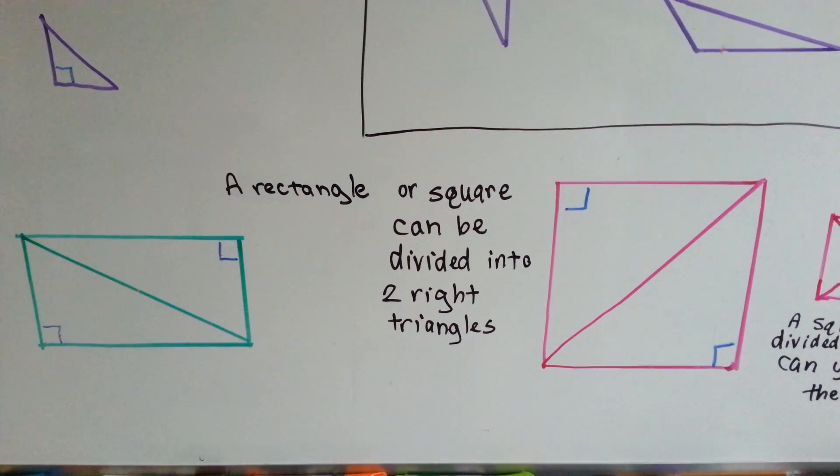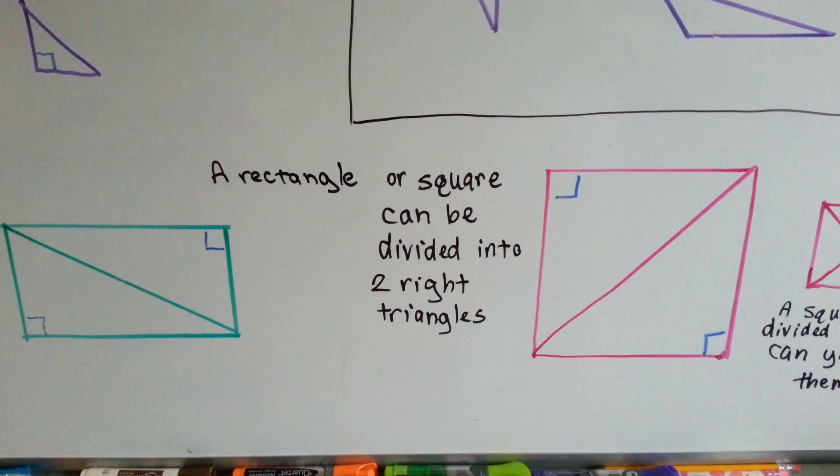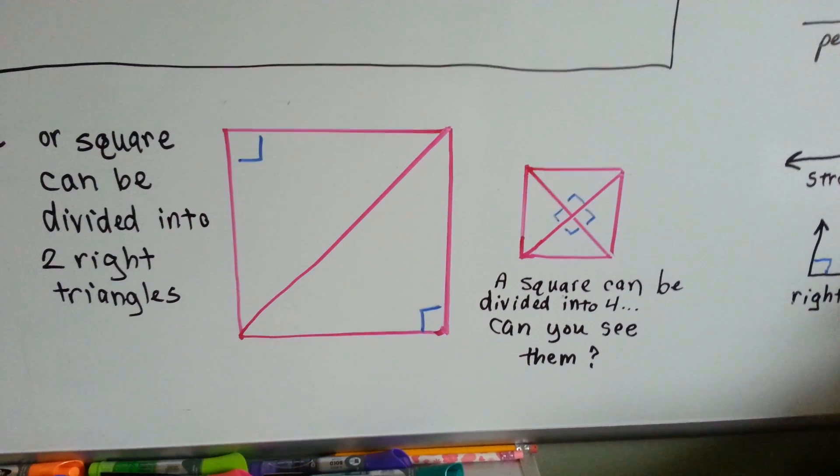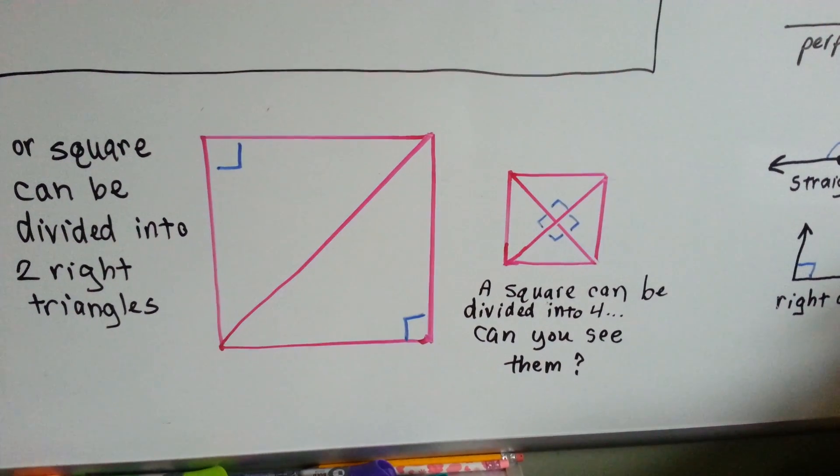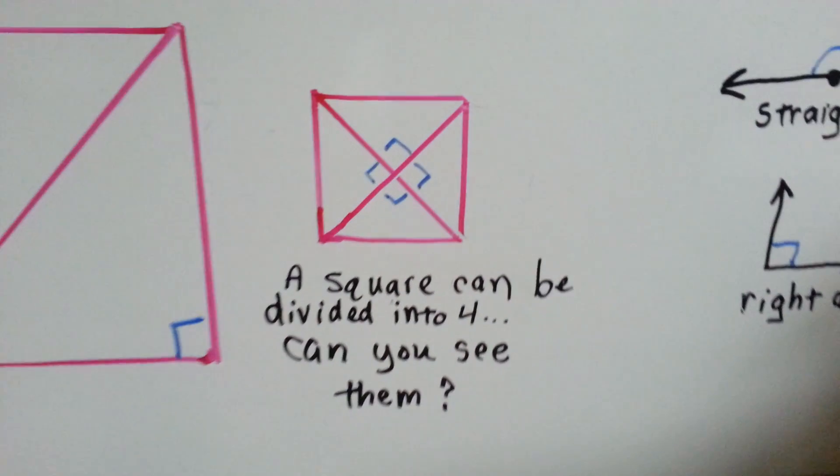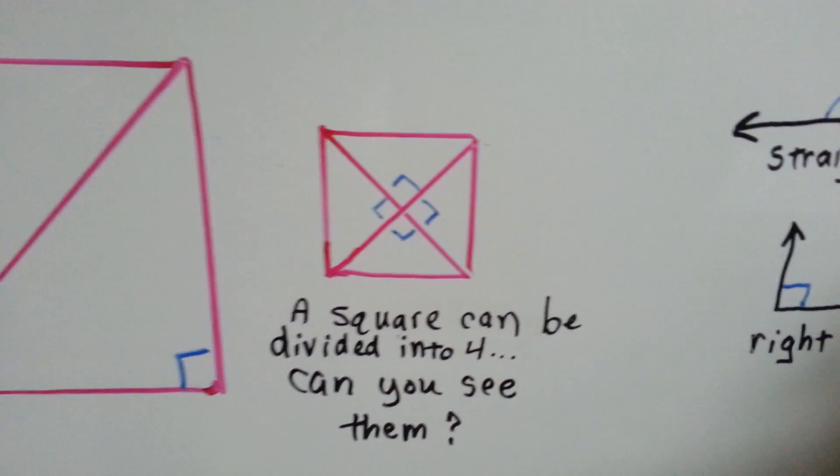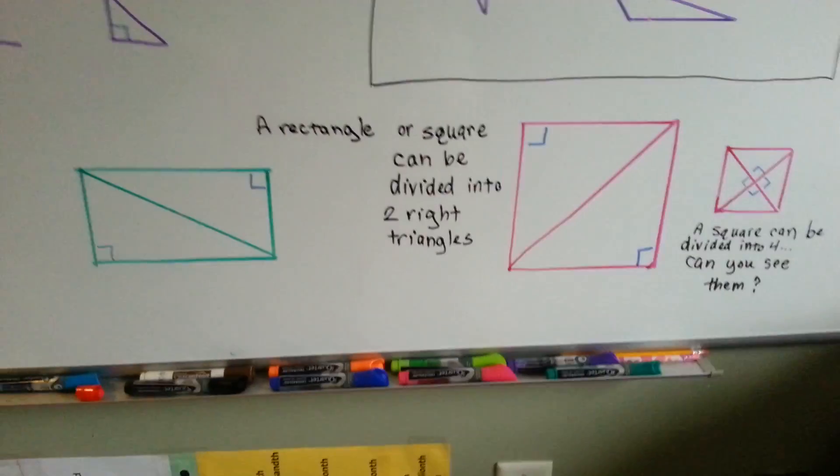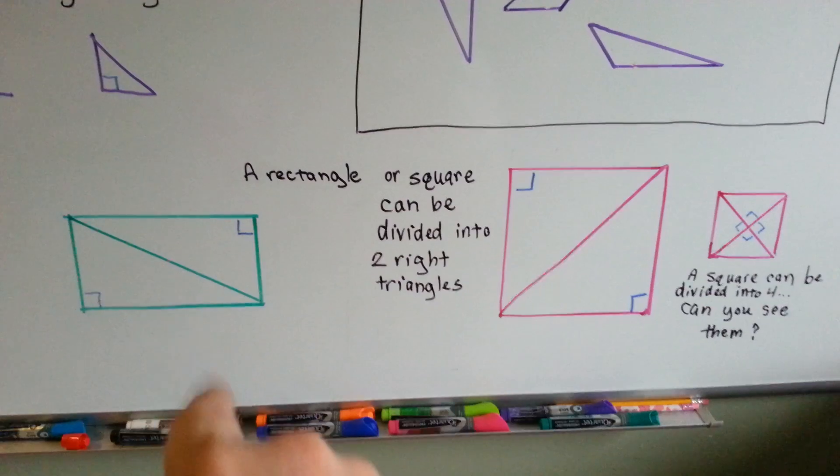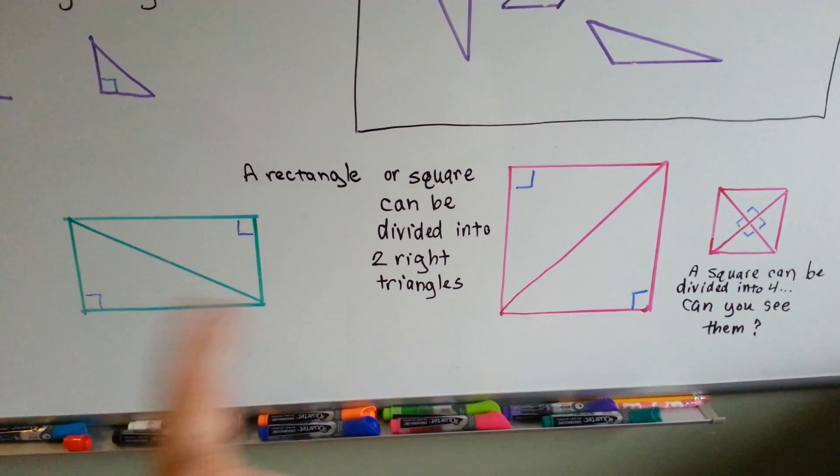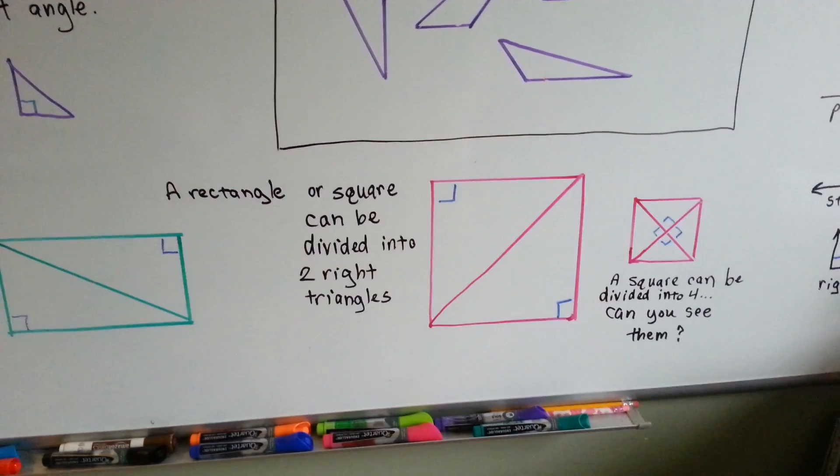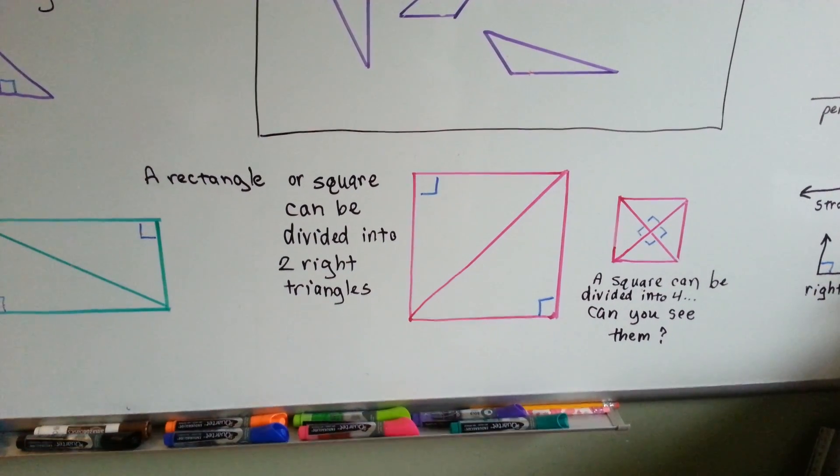Now, because the square has four sides that are equal, if we draw another line from the other vertex to the other vertex, we can divide it into four right triangles. See them in the center there? It won't work with the rectangle because the rectangle doesn't have four equal sides. It's only got two sides that are equal, and then these two sides are equal. It would have to have four equal sides to be able to make the four right angles in the center there.